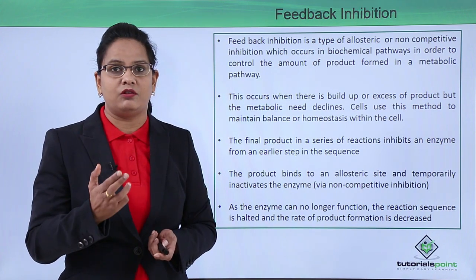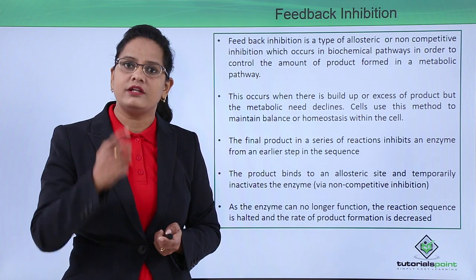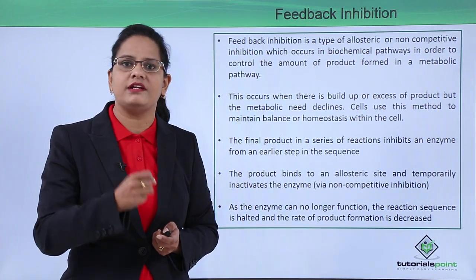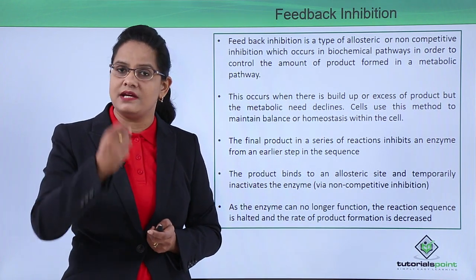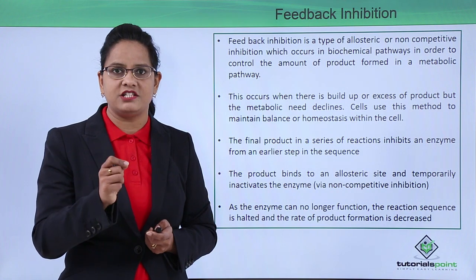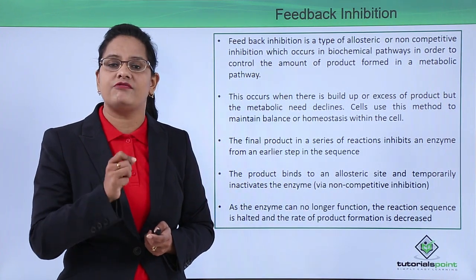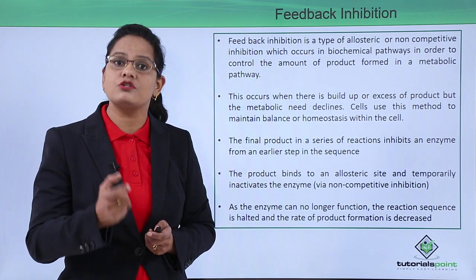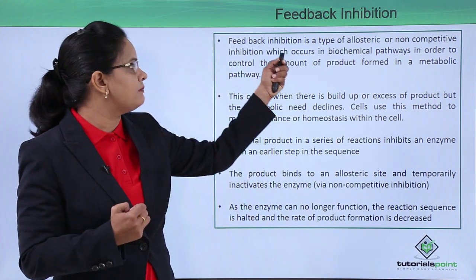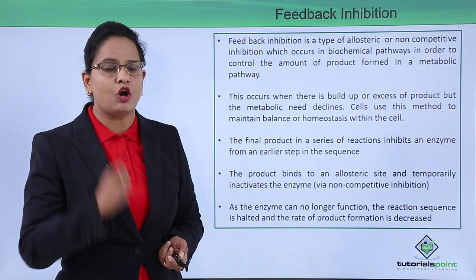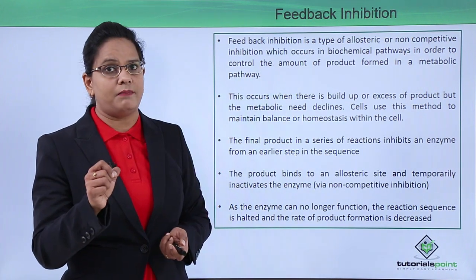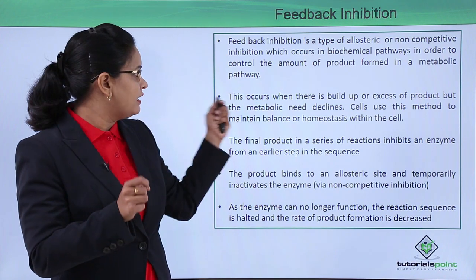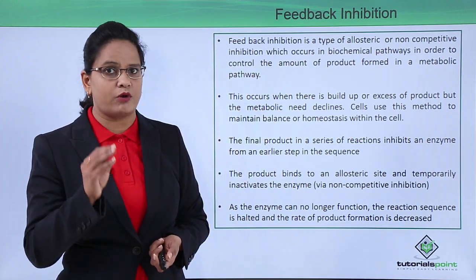All reactions in a cell happen at different steps, and each step is regulated by a specific enzyme. Those enzymes' activities are affected by the end product. If the end product is synthesized in excess or builds up, feedback inhibition occurs. It is a type of allosteric or non-competitive inhibition that occurs in biochemical pathways to control the amount of product formed.